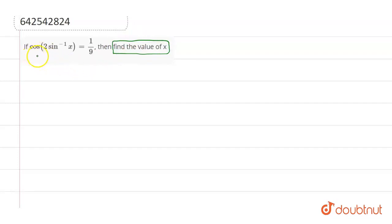The function is cos 2 sin inverse x is equal to 1 by 9. So, let's first consider sin inverse x to be theta. Then, cos 2 theta is going to be 1 by 9, just substituting the value of sin inverse x equals theta in this function.